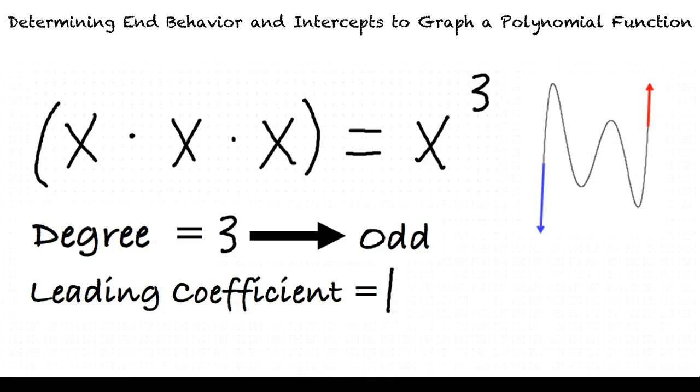In this example, since the leading coefficient is greater than 0 and the degree of the polynomial, 3, is an odd number, the graph will fall for its left end behavior and rise for its right end behavior.